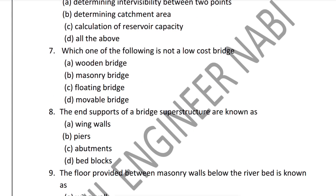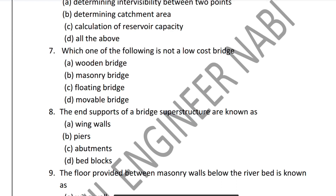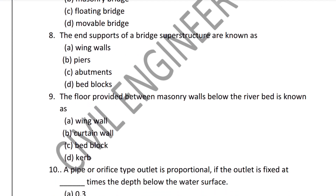Question 8: The intermediate supports of a bridge superstructure are called piers, while the end supports are called abutments. Piers are the correct answer for intermediate supports. Option B — piers — is the correct answer.